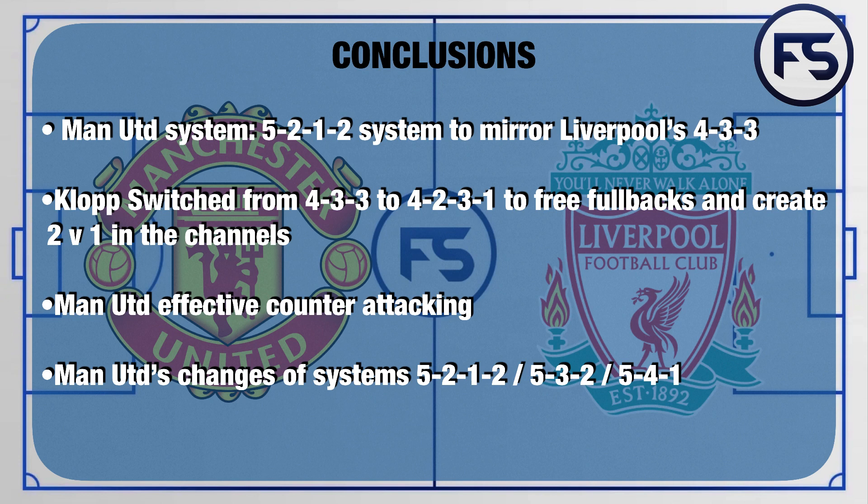The conclusions are that Manchester United adapted their system to a 5-2-1-2, done to mirror the Liverpool system with the 4-3-3 and prevent the fullbacks from getting forward. Klopp switched from the 4-3-3 to the 4-2-3-1 in the second half to free the fullbacks and to create two-against-one situations in the channels.